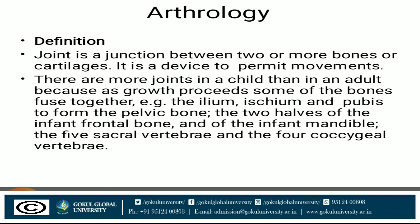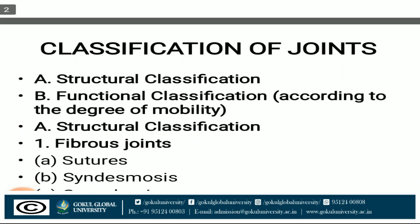As growth proceeds, some bones fuse together. Examples include the ilium, ischium, and pubis fusing to form the hip bone, the two halves of the infant frontal bone and the infant mandible, and the five sacral vertebrae and four coccygeal vertebrae.